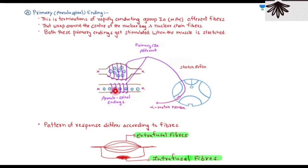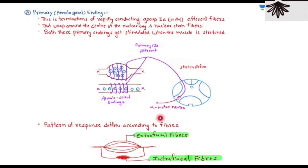In the knee jerk example, the extrafusal and intrafusal fibers both have their tendons attached. When the hammer strikes, the muscle is stretched, the muscle spindle detects the stretch, and the primary endings fire and stimulate. Different fiber types have different responses to stretch.